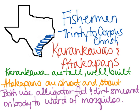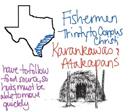Both tribes smear alligator fat and dirt together all over their body to ward off mosquitoes — definitely necessary when living along the Gulf Coast near water. Because the fishermen have to follow the food source, whether finding new fishing spots or gathering food from the land, they have to be able to move quickly. Their homes are little huts made out of grass and sticks, low and short to the ground, and able to be taken apart and moved quickly.